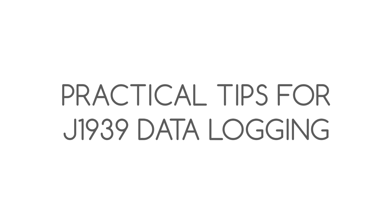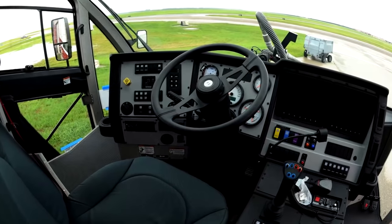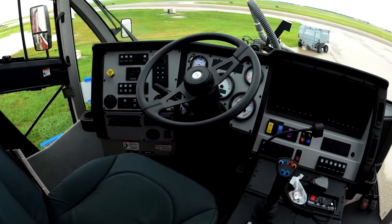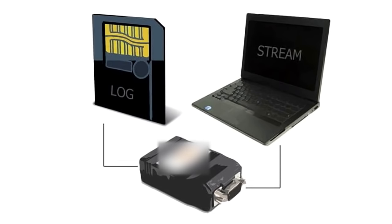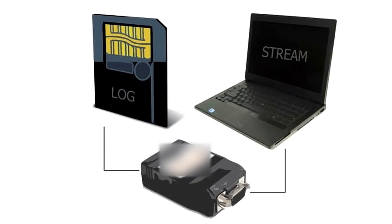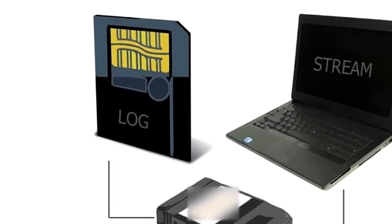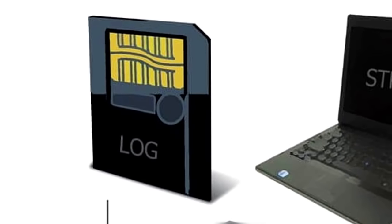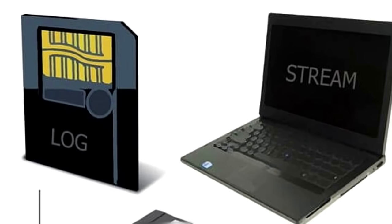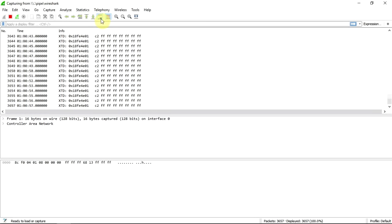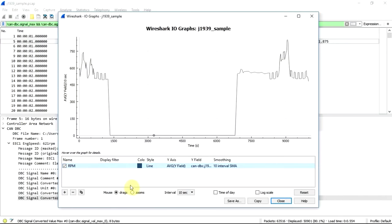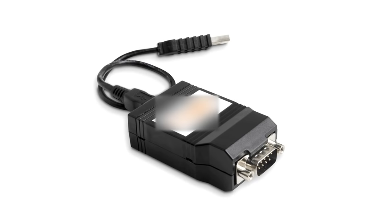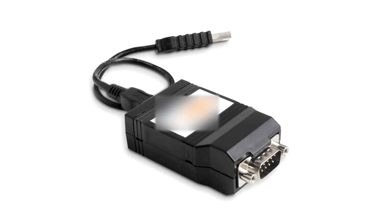Practical tips for J1939 data logging. First, consider if you need a logger or interface. Stand-alone CAN bus-based J1939 data loggers allow you to gather data over weeks or months of driving depending on the SD card size. A J1939 interface, in contrast, requires a PC to stream or trace data from the CAN bus in real-time, useful for diagnostic purposes or event-based analysis. Some J1939 data loggers — like the CAN Logger X000 — double as interfaces, providing a two-in-one solution.